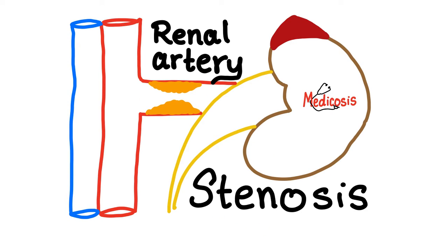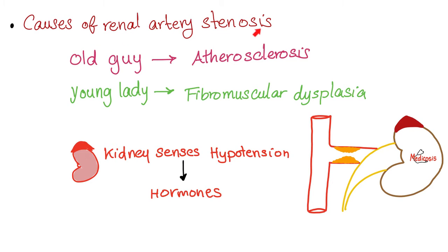Stenosis means narrowing of the renal artery. Causes include atherosclerosis — most common in older patients — and fibromuscular dysplasia, very common in young women. Regardless of the cause, if the renal artery is narrow, less blood reaches the kidney. The kidney senses low perfusion and releases renin to try to raise blood pressure, which can lead to hypertension.